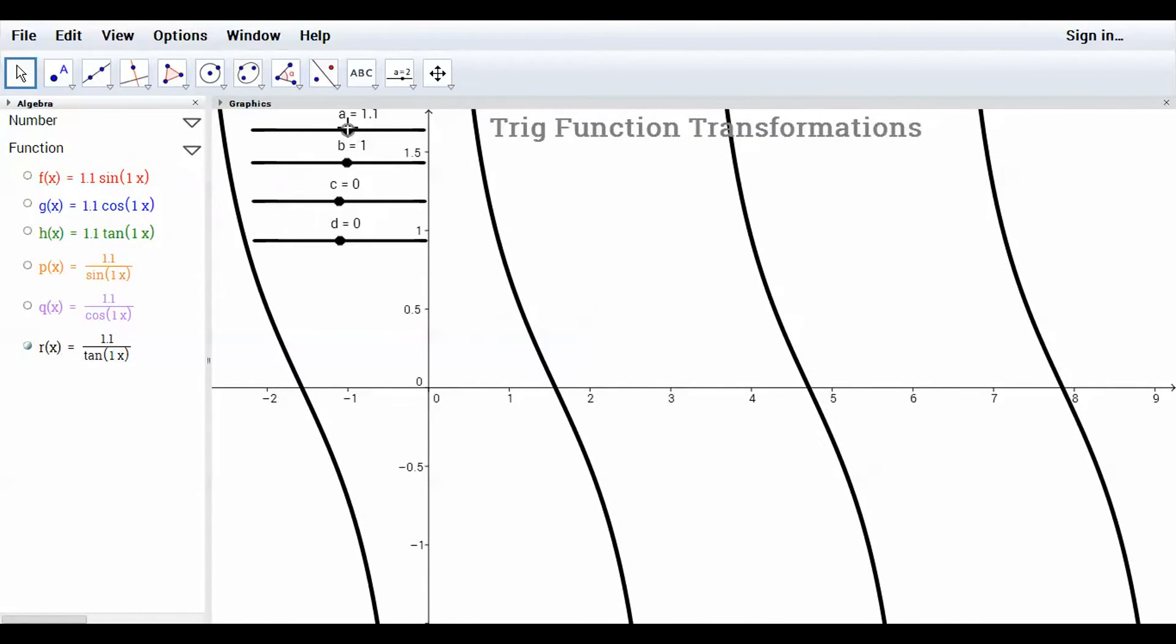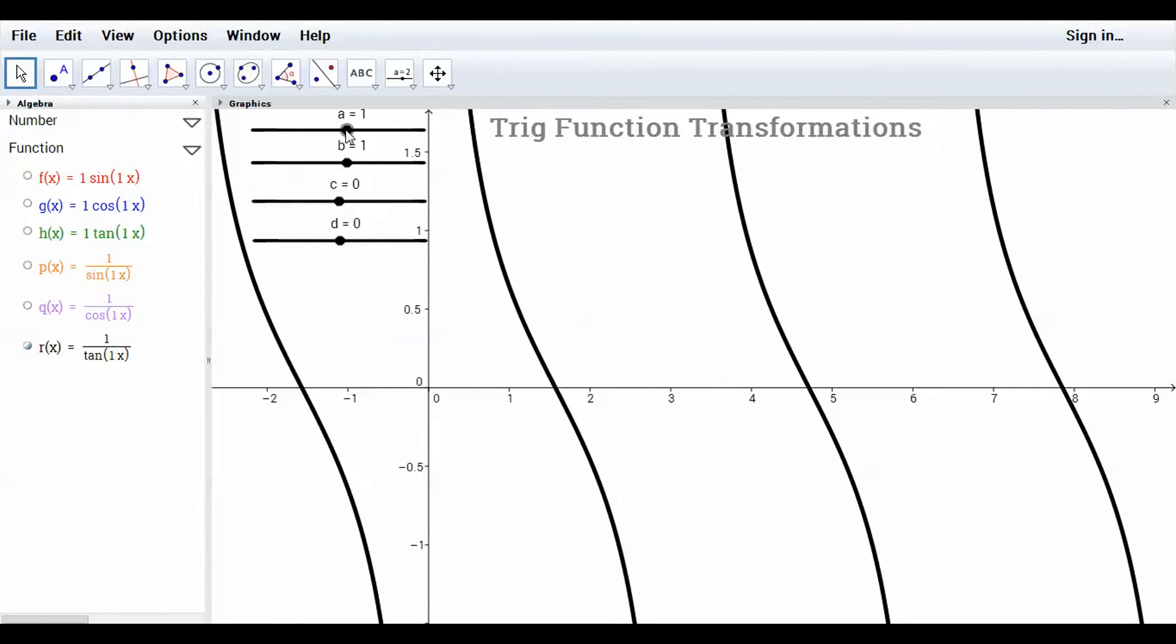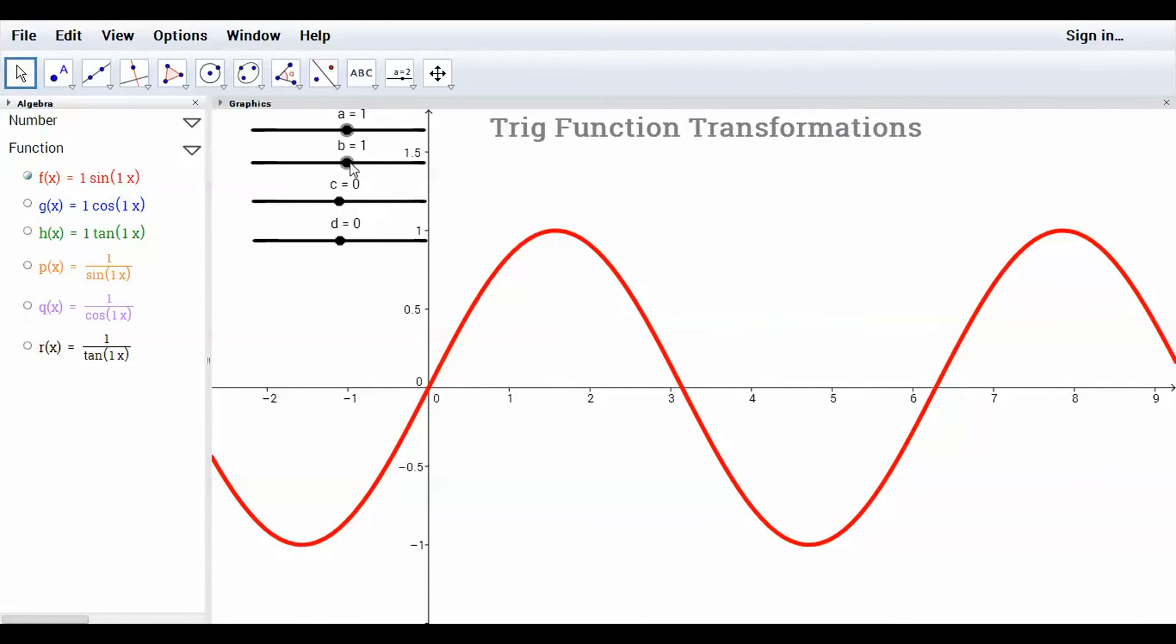Let's mess with the B value. The B value, as I mentioned, changes - I'll put sine back on the screen - it changes the period, right? So if normally the period of sine is 2 pi, which means it starts here and it ends here at 2 pi, about 6.28.